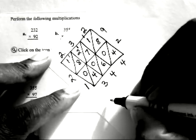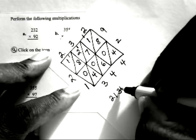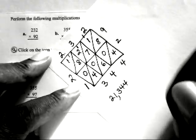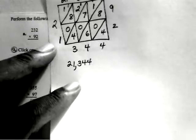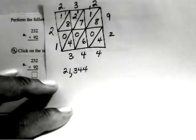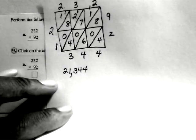So this final answer will be 2, 1, 3, 4, 4. So that means 232 times 92, we're giving the final answer of 21,344.